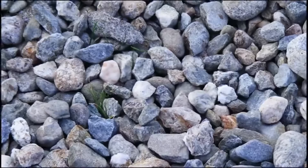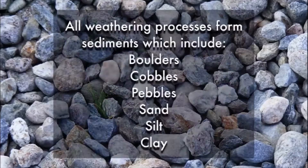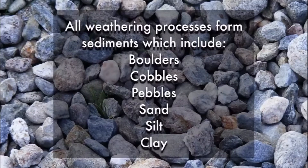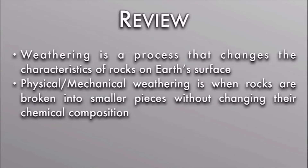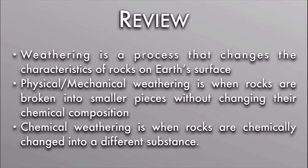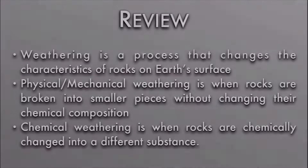No matter what type of weathering we're talking about, all weathering processes break rocks into smaller rocks. They take rocks and make them into sediments, which include: boulders, cobbles, pebbles, sand, silt, and clay — from biggest to smallest. To review: weathering is a process that changes the characteristics of rocks on Earth's surface. Physical or mechanical weathering is when rocks are broken into smaller pieces without changing their chemical composition. Chemical weathering is when rocks are chemically changed into a different substance. That's it for now — thanks for watching.